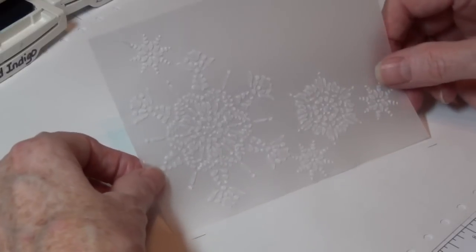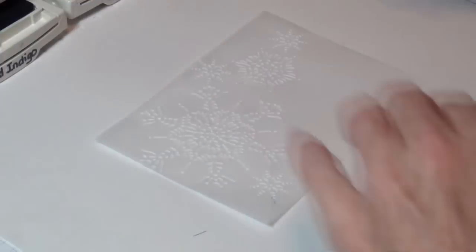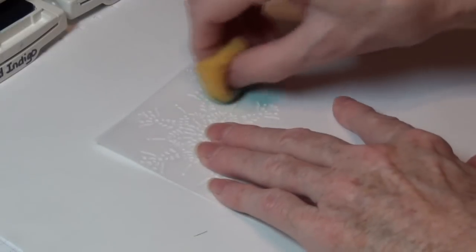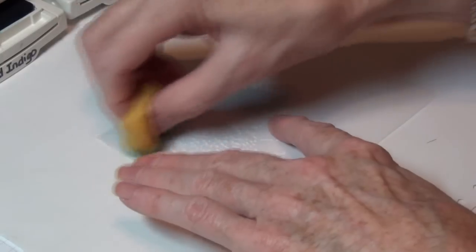Stampin' Up carries two weights of vellum paper. This is the paper weight and we also carry a cardstock. We're going to take our Baja Breeze and we're going to ink around this snowflake, but not inking on the snowflake.